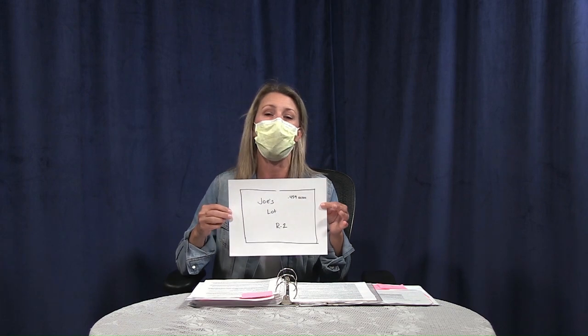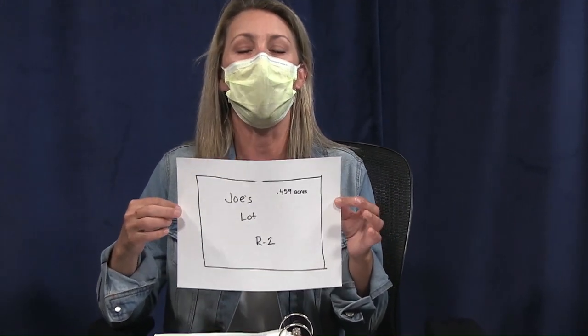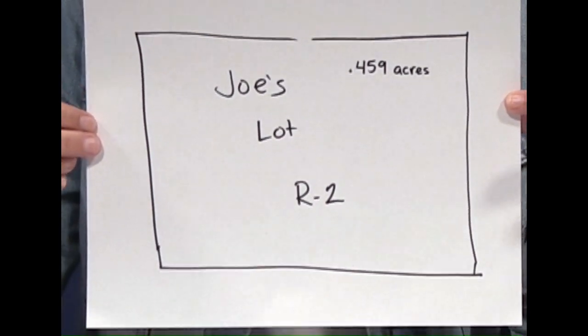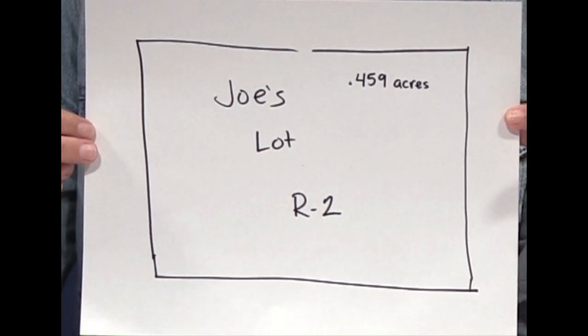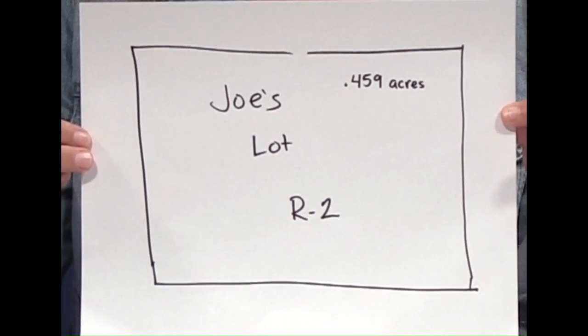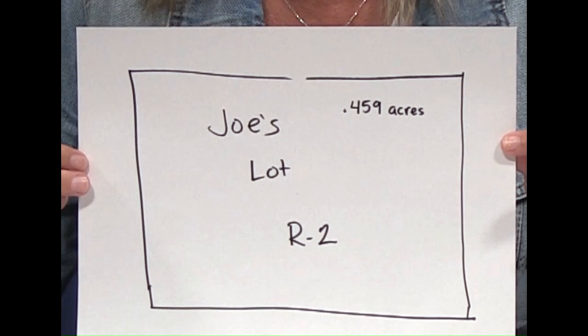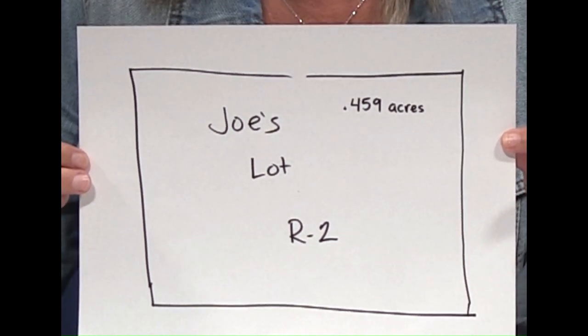So we're going to take Joe. Joe owns a lot in the R2 zone. It's 0.459 acres. He found out it was in the R2 zone because he looked on the zoning map.